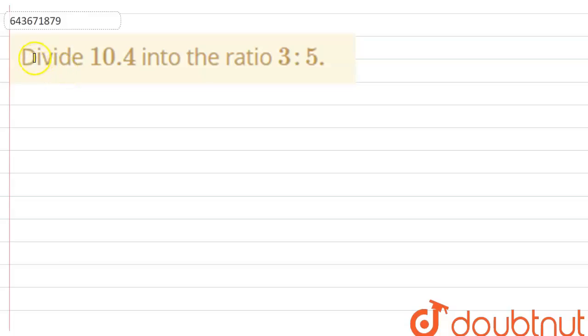Hello everyone, so the question given is divide 10.4 into the ratio of 3 and 5, 3 is to 5. We have to divide 10.4 into the ratio of 3 is to 5.